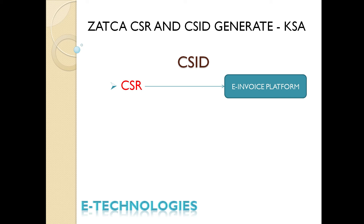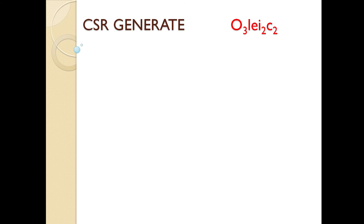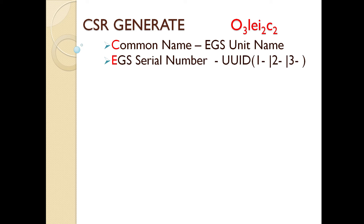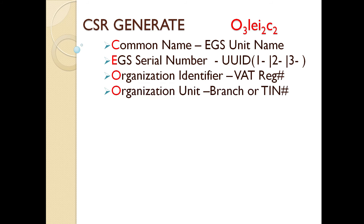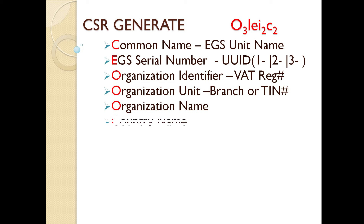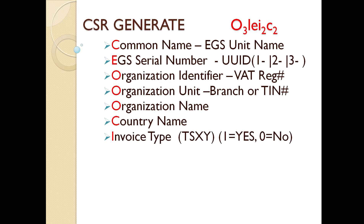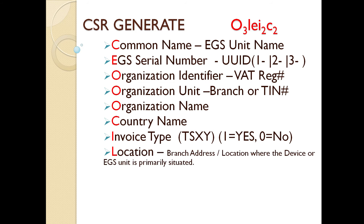What information will be included in the CSR? It will include: common name, EGS serial number, organization identifier, organization unit, organization name, country name, invoice type, location of the organization, and industry. Using this information, we will generate the CSR, submit it to the Fatura Portal, and we will get the CSID.